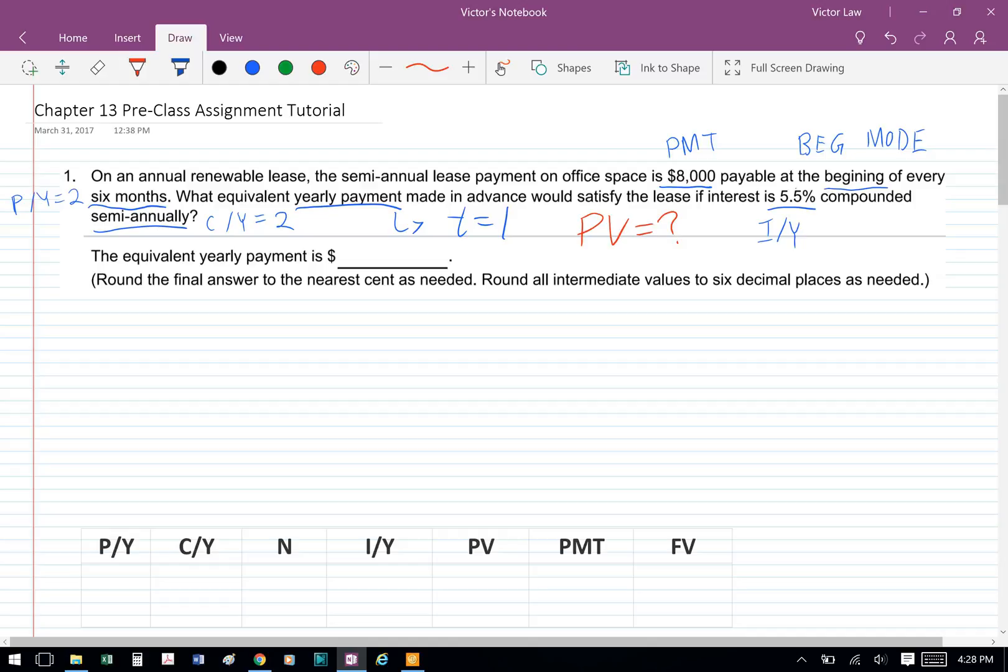And the payment is made every six months, so our P over Y equals 2, and we're looking for the equivalent value for that. So we're looking for present value, and we're looking for the equivalent yearly value.